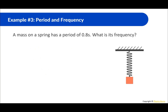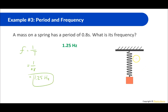A mass on a spring has a period of 0.8 seconds. What is the frequency? Frequency is the inverse of period: 1 divided by 0.8 equals 1.25 hertz. This means the mass is oscillating — going up and down — making one full cycle and a quarter of another cycle in one second.